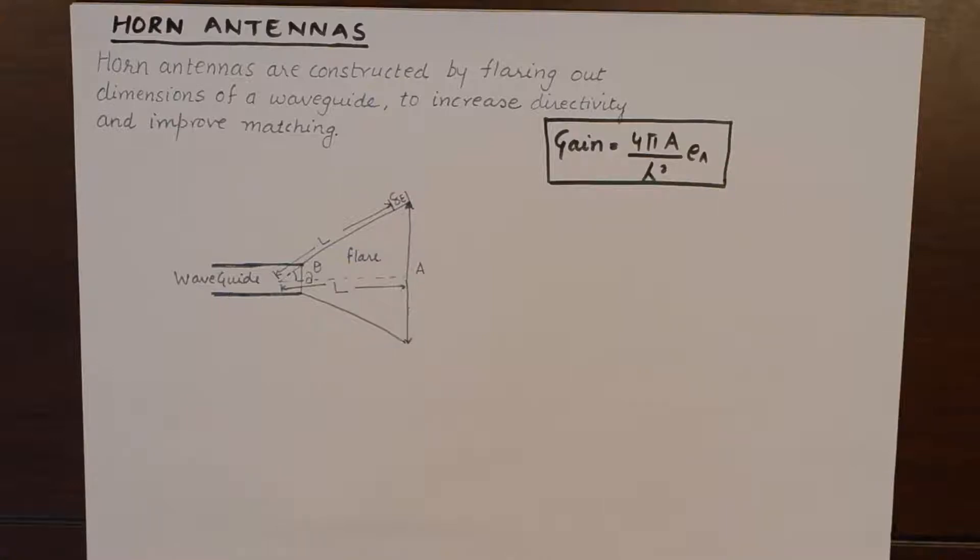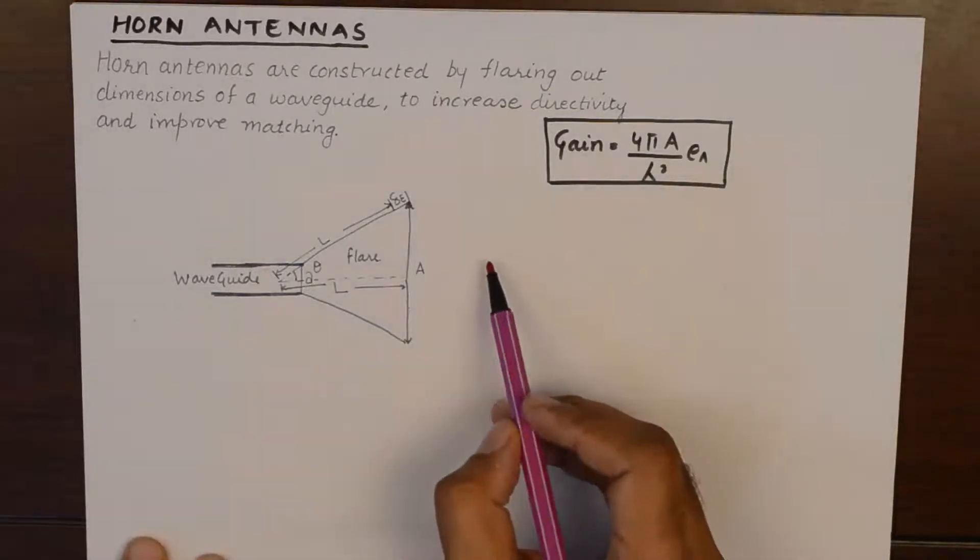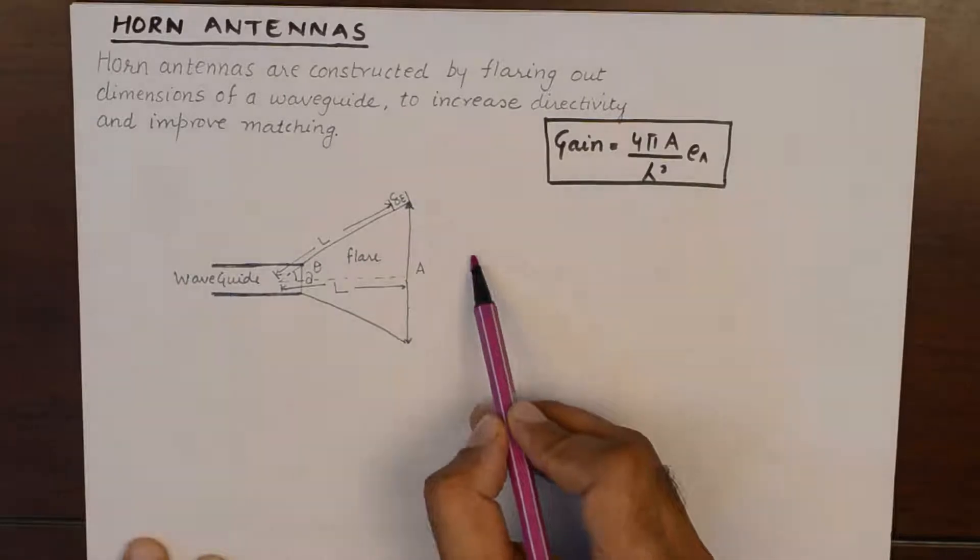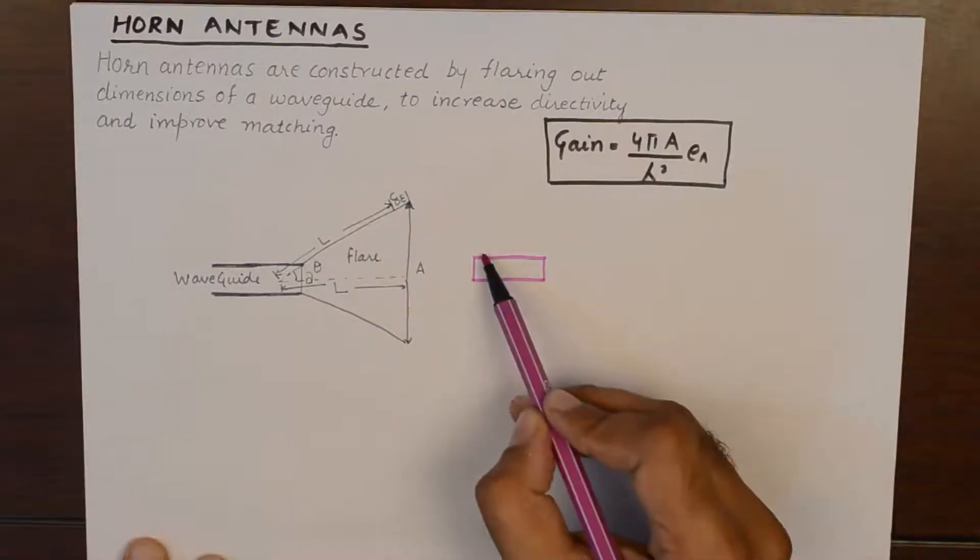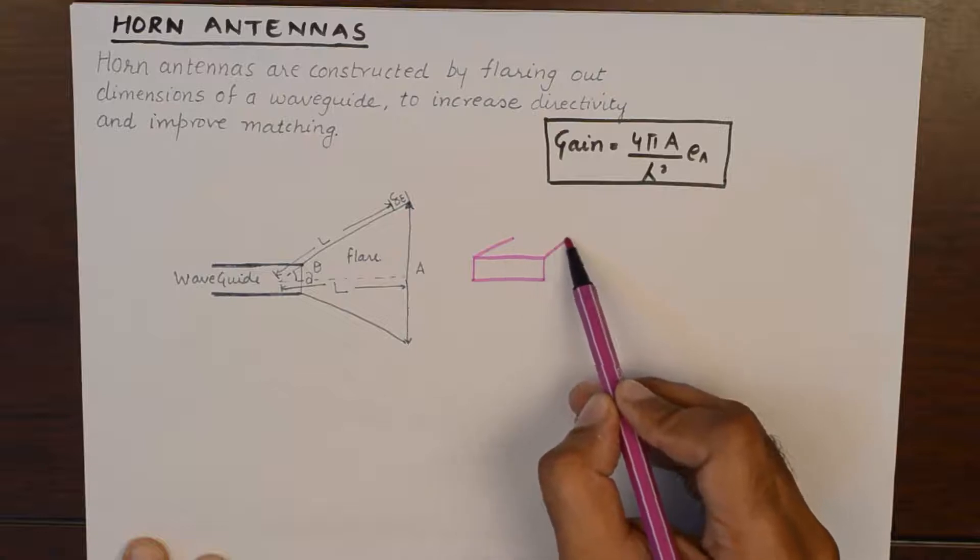Now as far as the definition of horn antennas is concerned, they are simply constructed by flaring out dimensions of a waveguide. Now if we understand the structure of a waveguide, it's a hollow metallic enclosure.